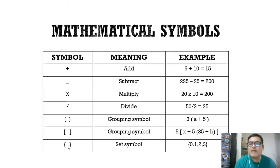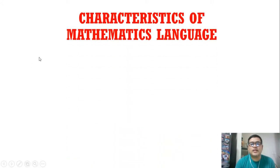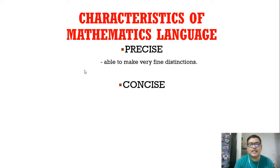What are the characteristics of mathematics language? Number one, it's precise. When we speak of precise, you're able to make very fine distinctions. For the language of math to be precise is to make very fine distinctions. Concise means able to say things briefly.